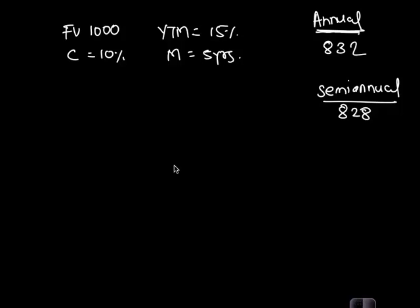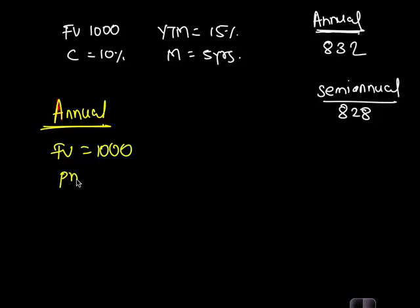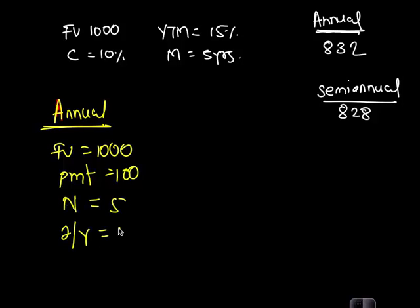In case you are struggling with this, let me write down the keys. For annual valuation on the Texas Instruments calculator: FV = 1000, PMT = 100, N = 5, I/Y = 15, then compute present value.